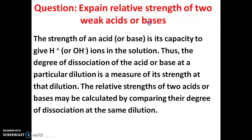Next question: explain the relative strength of two acids or two weak bases. The strength of an acid or base is its capacity to give H⁺ or OH⁻ ions in solution. The degree of dissociation of the acid or the degree of dissociation of the base at a particular dilution is a measure of its strength at that dilution.